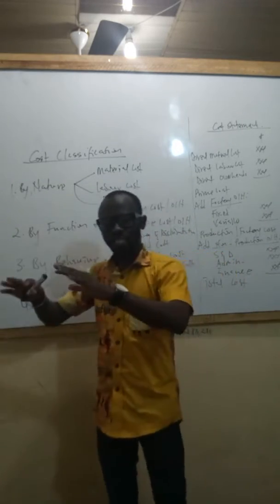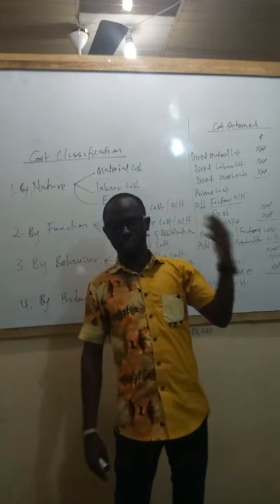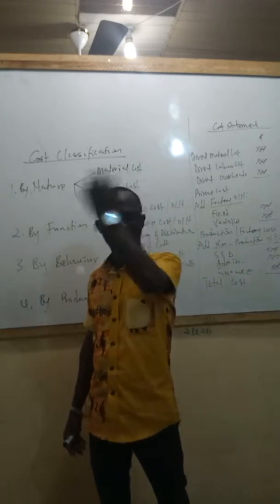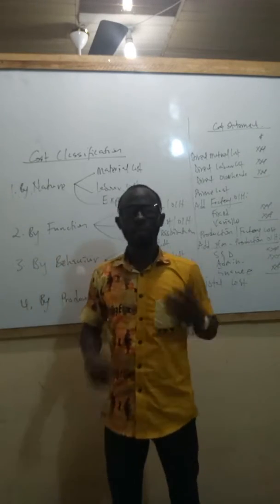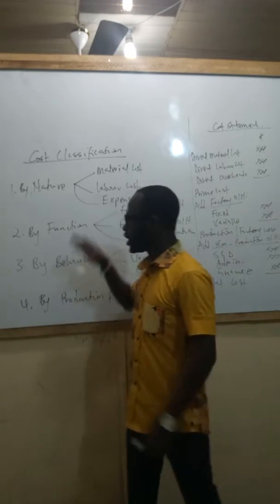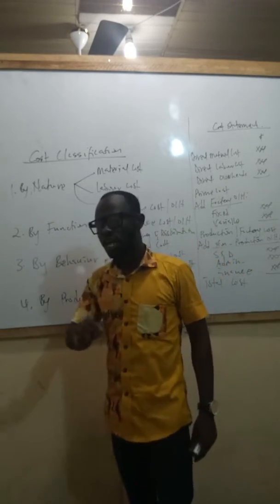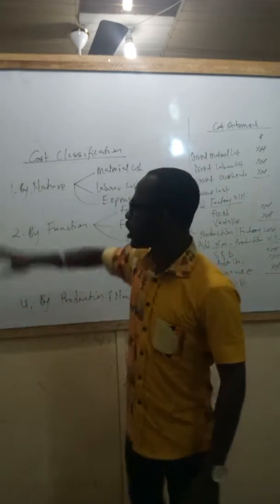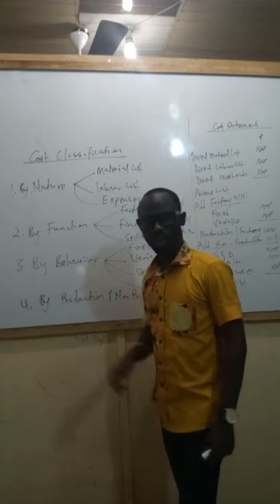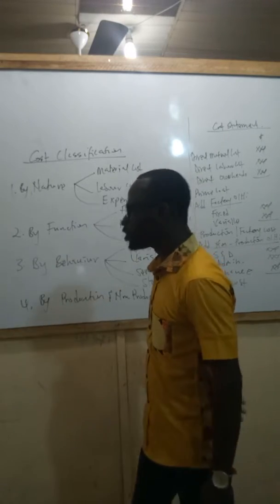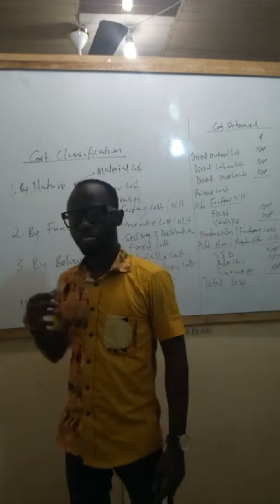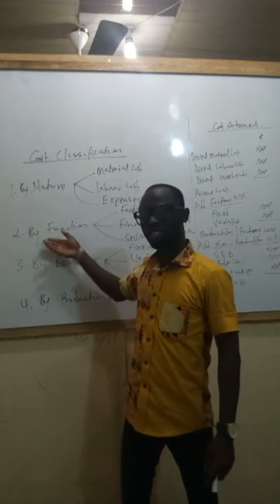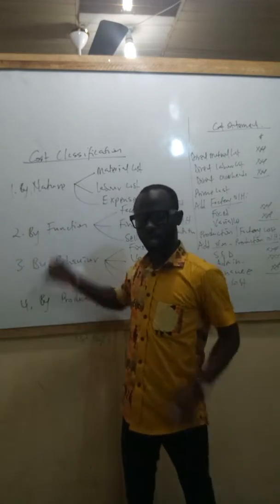All other expenses like electricity, like fuel, like other things, become indirect expenses. So, that is what we mean by classification of cost according to nature. Let's come to the second one: classification of cost according to function. What do we mean?